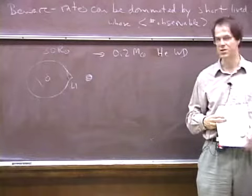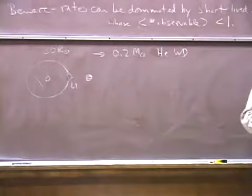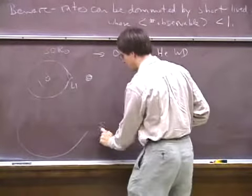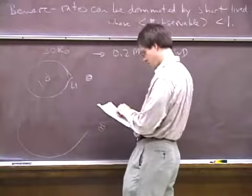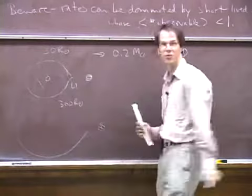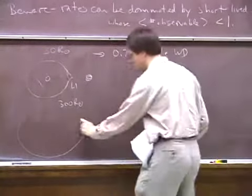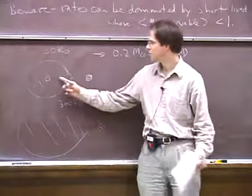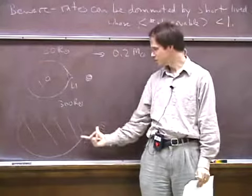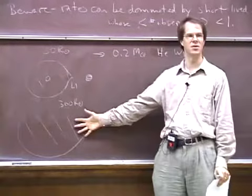Essentially all of the envelope outside the degenerate core gets lost to the companion. Now suppose instead the same star is in a binary whose Roche lobe radius is about 300 solar radii — a binary separation 10 times bigger than the last one. The probability of making binaries with separations is roughly equal for every decade in separation, so these systems are just as common.